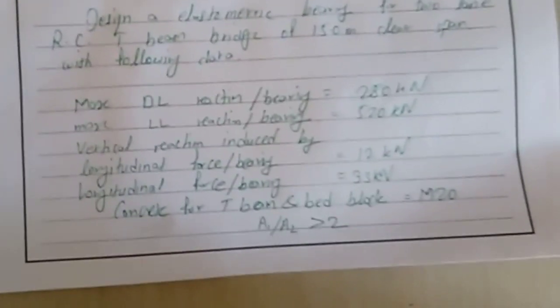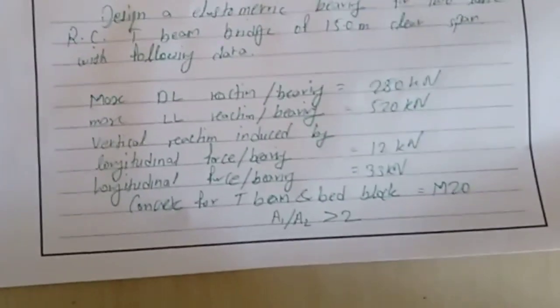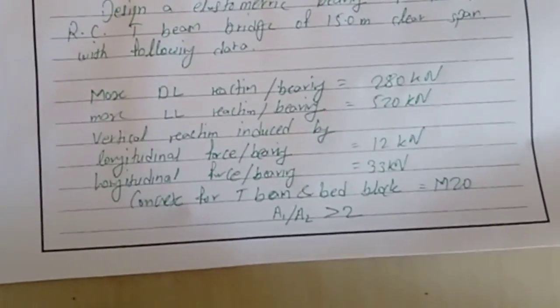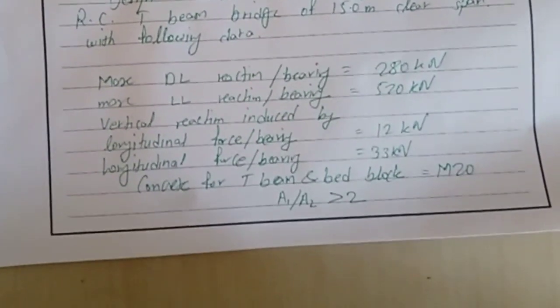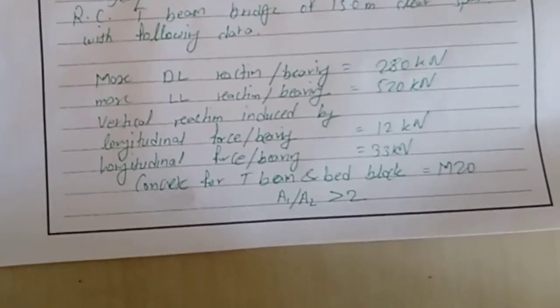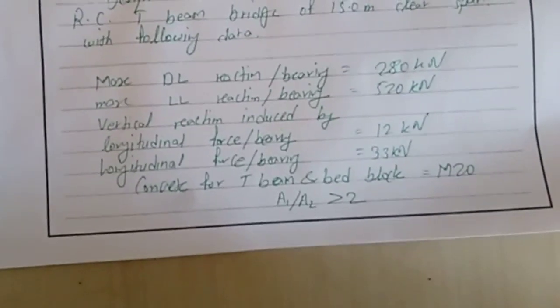Maximum live load reaction per bearing is 520 kN. Vertical reaction induced by longitudinal force per bearing is 12 kN. Longitudinal force per bearing is 33 kN, and the ratio of a1 by a2 is given as greater than 2.